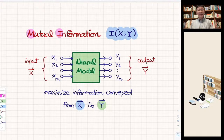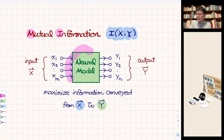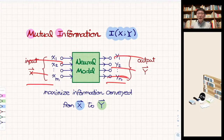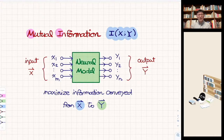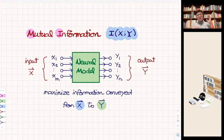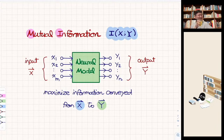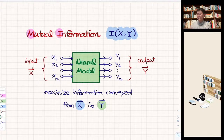Hello everyone, welcome back. In this video we are going to talk about mutual information. I hope to introduce what we call a neural model with input and output, where you have two sets of random variables, and you want to know how you can maximize the information conveyed from X to Y. In the extreme case, imagine the neural model is a lazy guy who doesn't take down any information from X and just uses a random number generator to generate Y — how would you know? It's a very interesting concept.